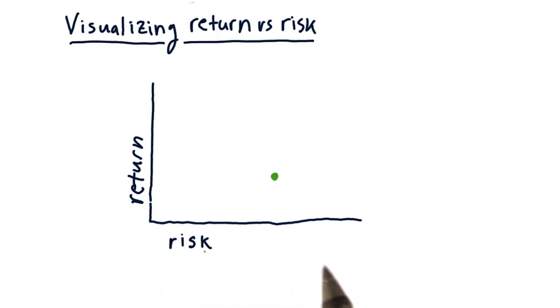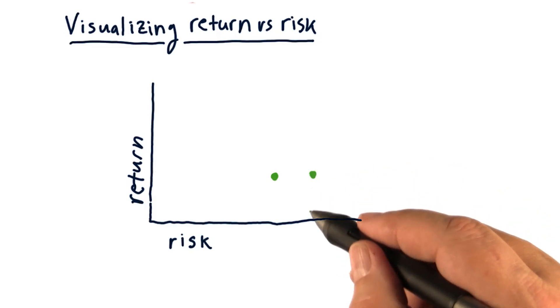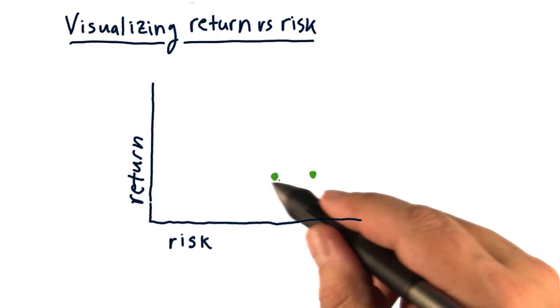Risk is along this axis, return is along this axis. For instance, this stock here has higher risk but about the same return as this stock.